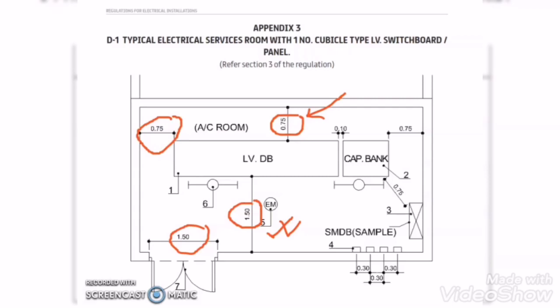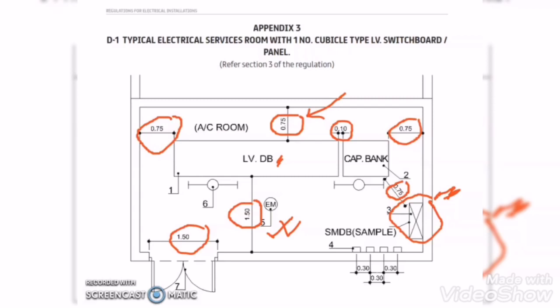If we are placing any panel adjacent to the LV panel — it can be another LV panel or a capacitor bank for the same LV panel — then the minimum distance between the two panels must be maintained at 0.10 meter, that is 10 cm. Similarly, the distance between the side wall of the electrical room and the panel must be maintained at 0.75 meter. If we are placing any other panel like an SMDB or ATS panel, we have to make sure that the panel door does not clash with the other panel during opening and closing.